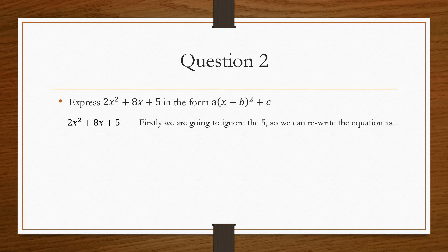So, same as before, we will ignore the 5 and we'll just write 2x squared plus 8x.